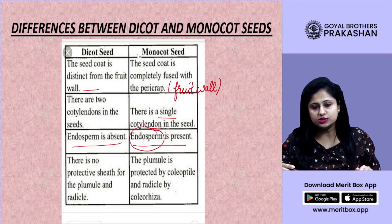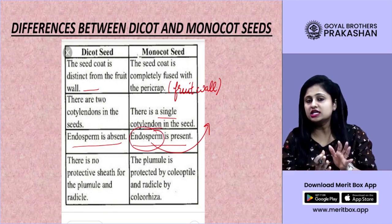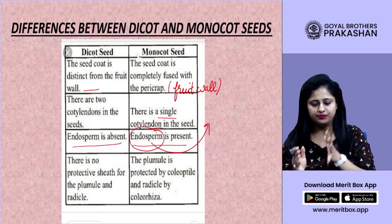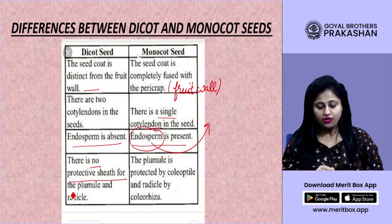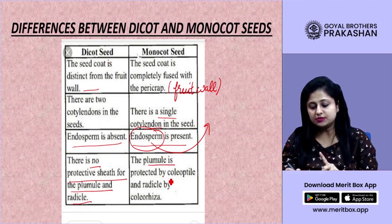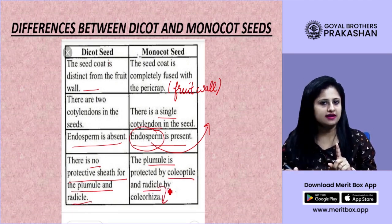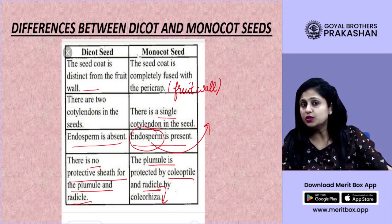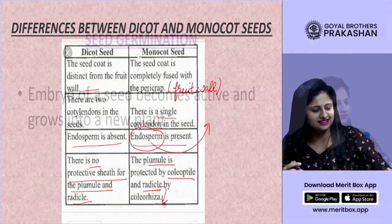In dicot seeds, there is no protective sheath for the plumule and radicle. In monocot seeds, the plumule is protected by the coleoptile while the radicle is protected by the coleorhiza. A helpful trick: R for rhiza, R for root, and R for radicle — all related.